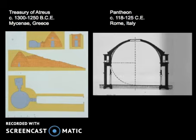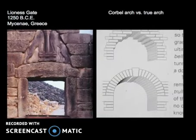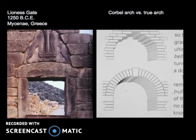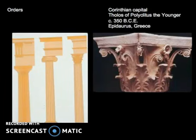Here we see two types of arches. The earlier corbel arch consists of courses of stone, each of which extends farther than the one below it. Second, the true arch consists of wedge-shaped stones, of which the centre or keystone locks the system in place. Here we see three types, or orders, of columns.